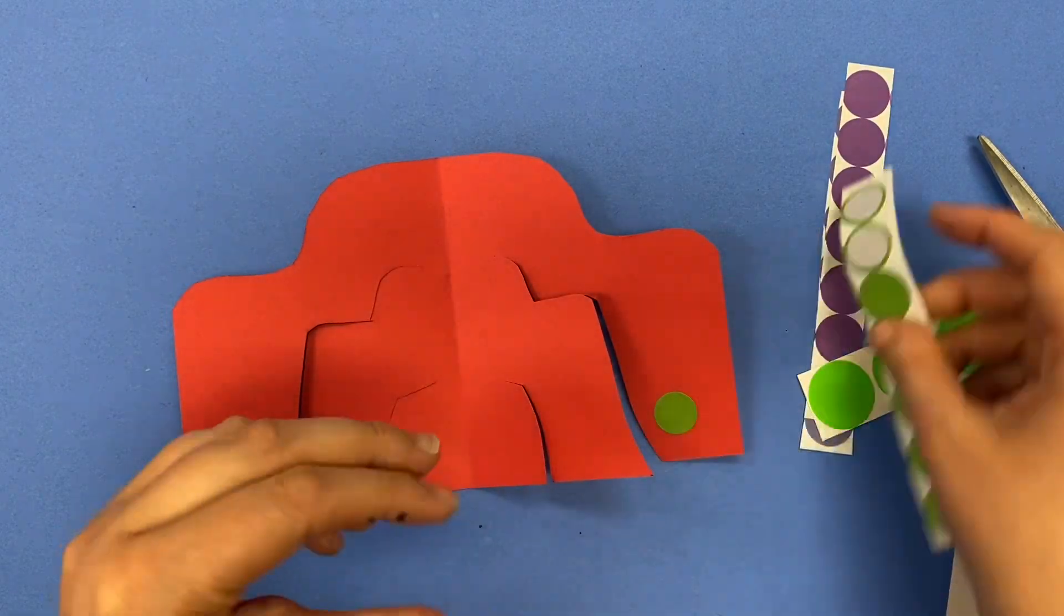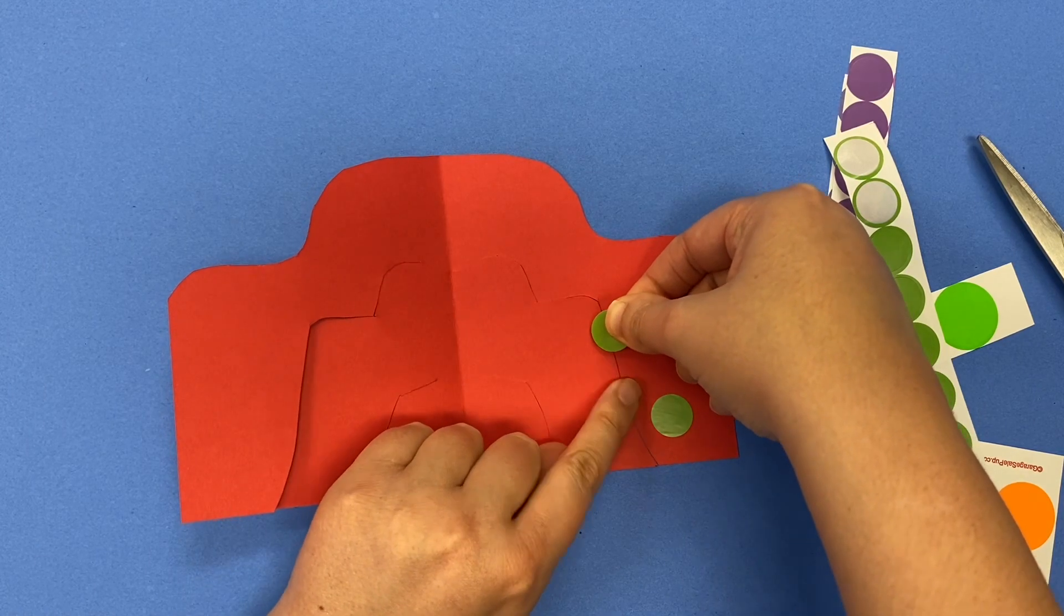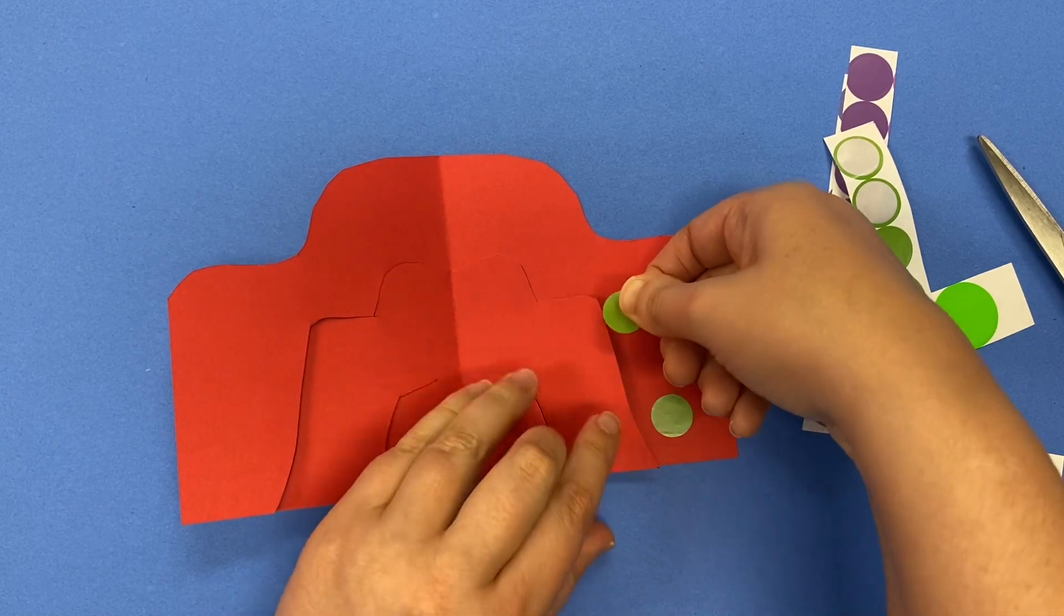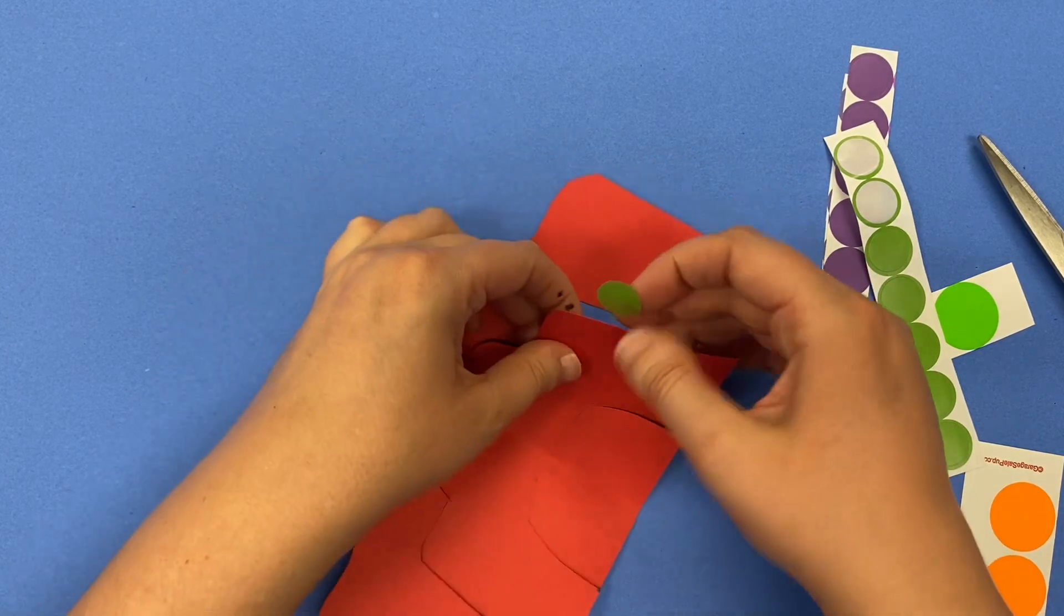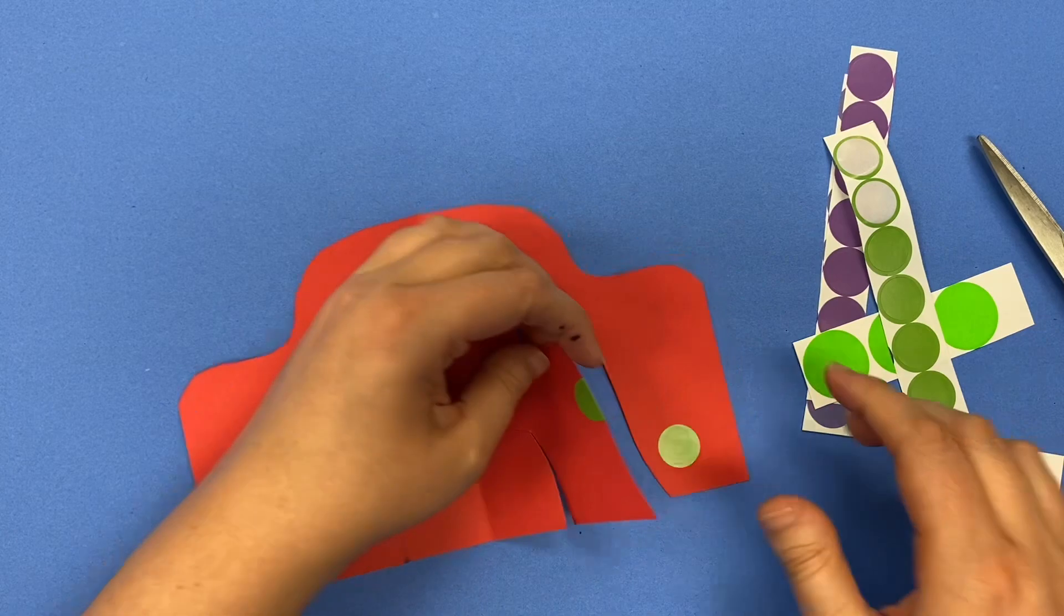And then you're just going to decorate your Stabile with those dots. The most important thing is you do not want to put any stickers right on the line. If you accidentally do, it's fine. We can just cut through it.